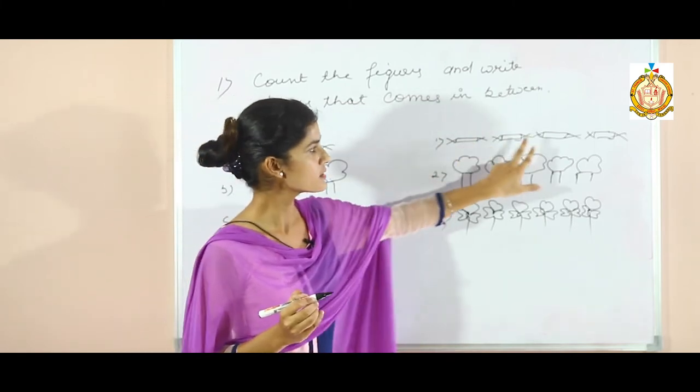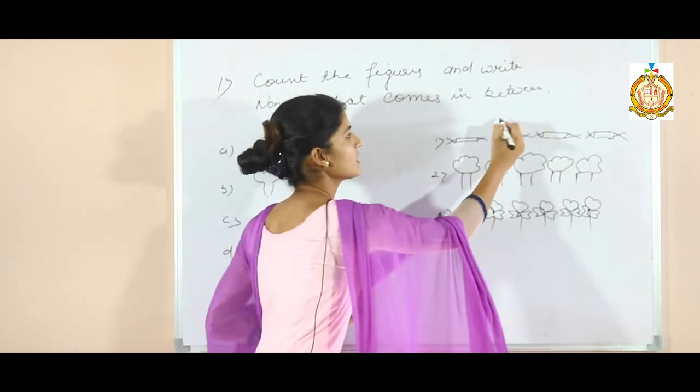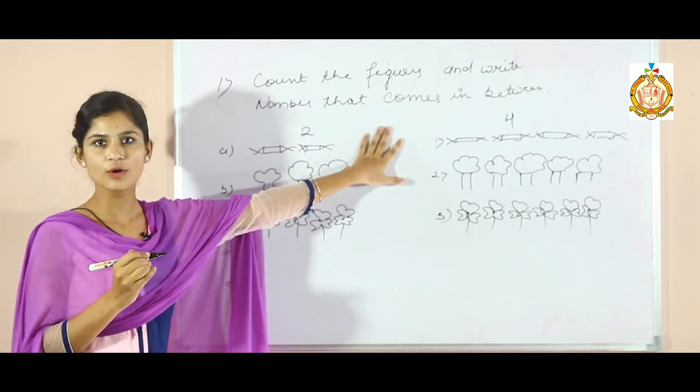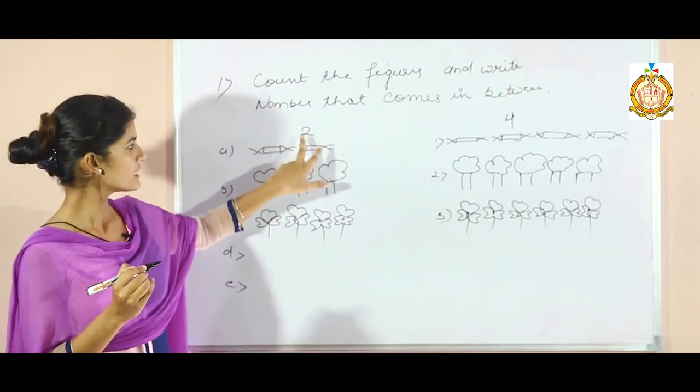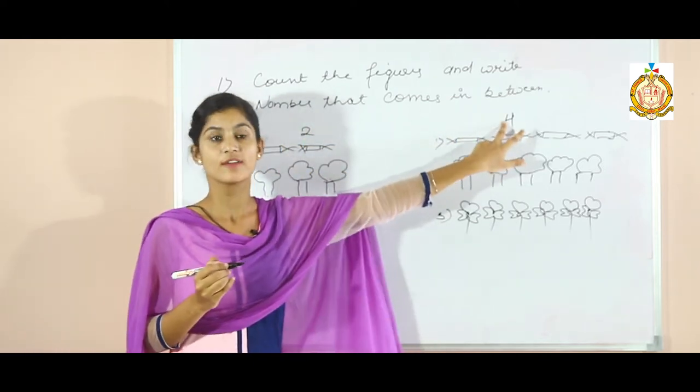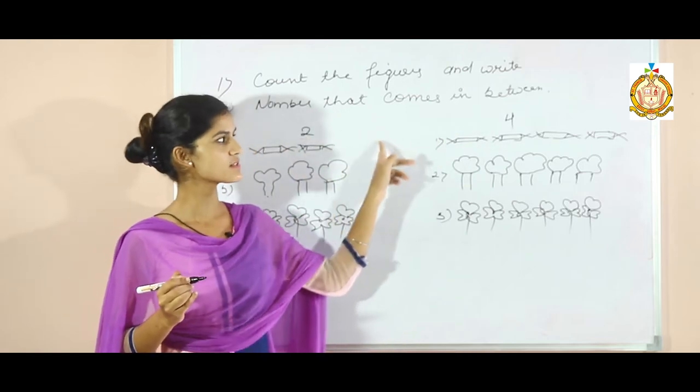And how many are there? 1, 2, 3 and 4. Write 4 here. And you have to draw the beads of that number which comes in between of 2 and 4. Which number comes in between of 2 and 4?